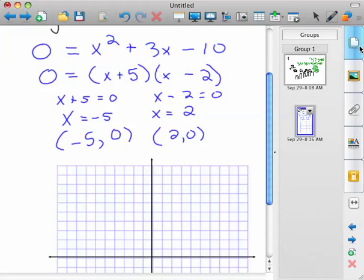And graph those two points. So negative 5, 0, so 1, 2, 3, 4, 5 is right there. 2, 0 right here.